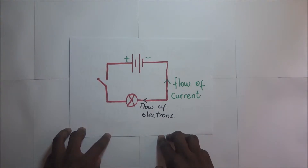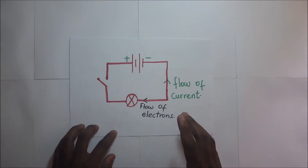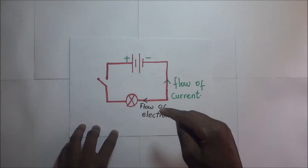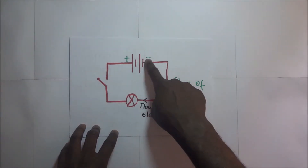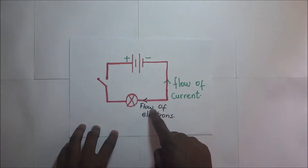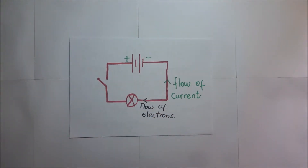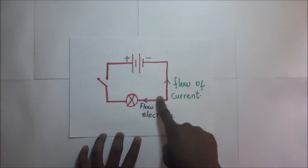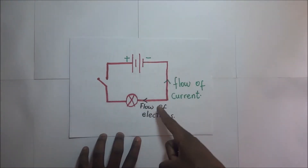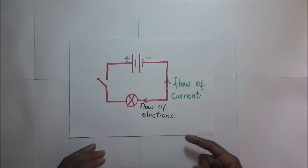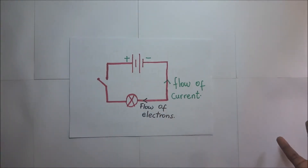With that brief history, we know that the conventional current flows from positive to negative, but the actual flow of electrons is always in the opposite direction. In short, we conclude by saying: electrons flow from negative to positive, and current flows in the opposite direction to the flow of electrons — that is by convention, and that is what is generally accepted.